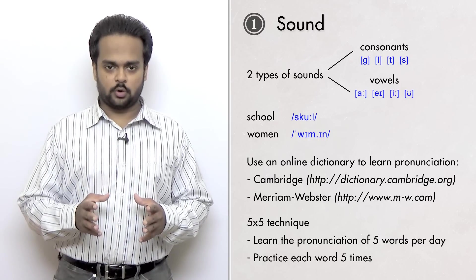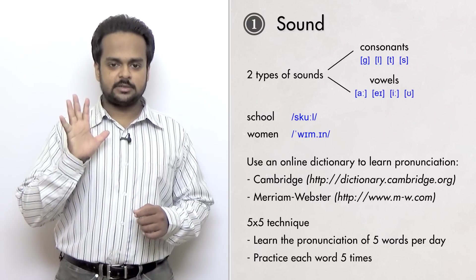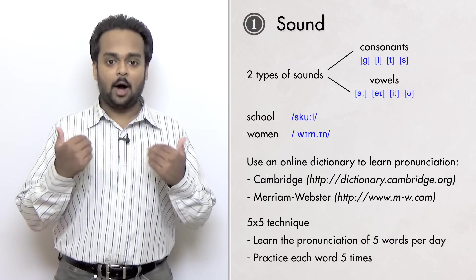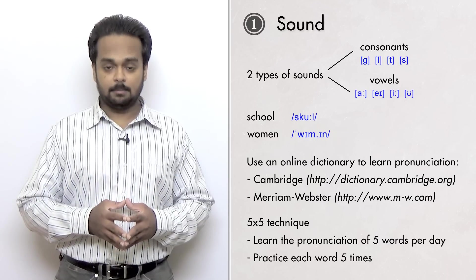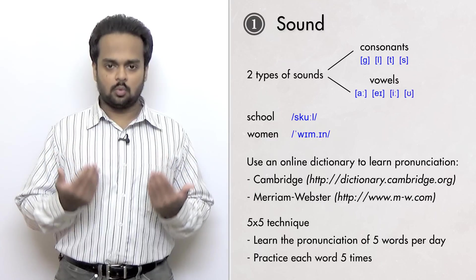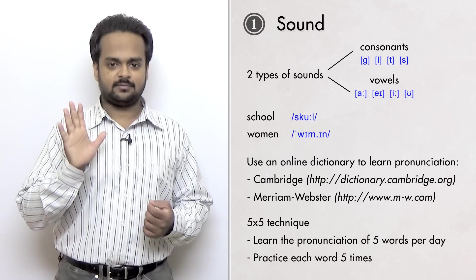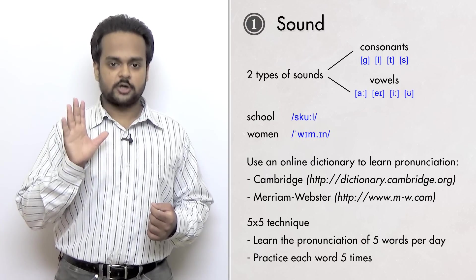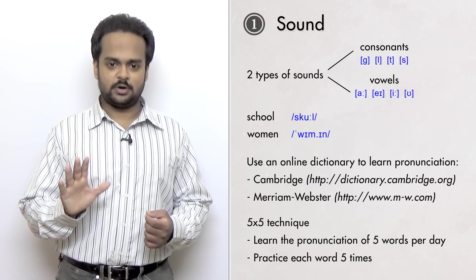So here's an action point for you. Every day, learn the pronunciation of at least five words. Pick words that you're not sure how to pronounce and look them up in an online dictionary. Play the audio on the website or app and practice along with it. For each word, practice saying it correctly at least five times. This is my five-by-five method. Practice the correct pronunciation of five words five times every day.